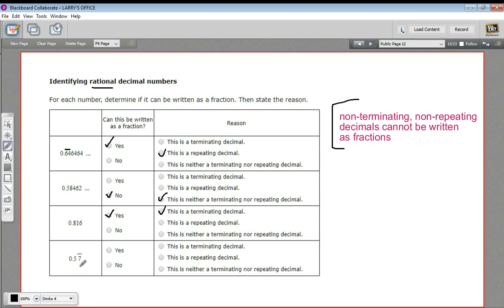This last one, we have 0.57 repeating. That is a repeating decimal, so it can be written as a fraction because it's repeating. So that is a little bit of work with identifying rational decimals.